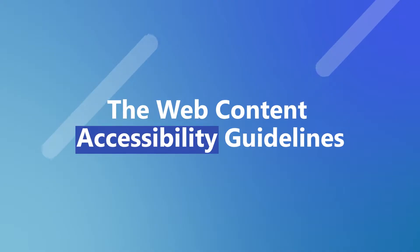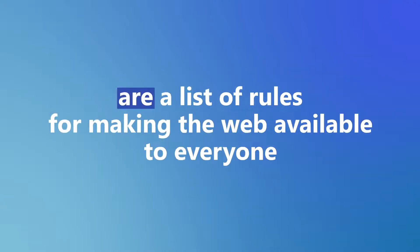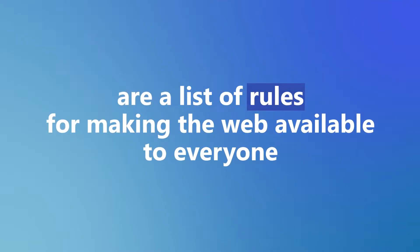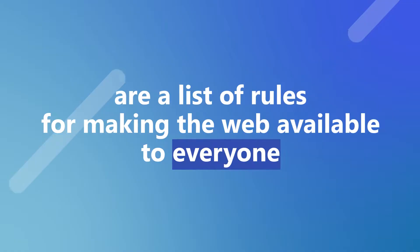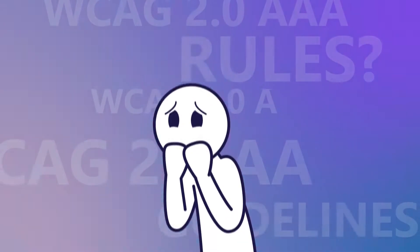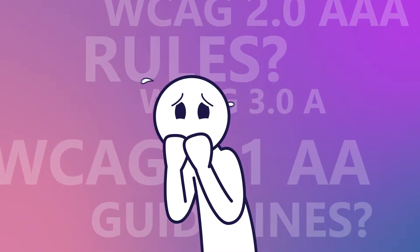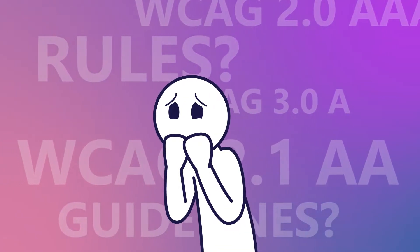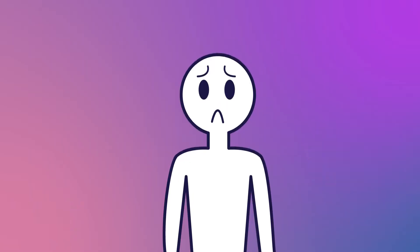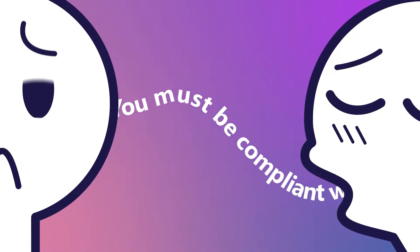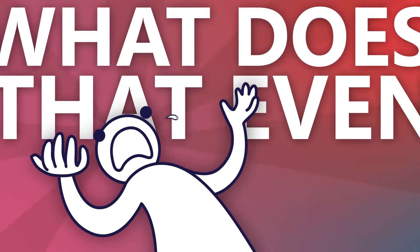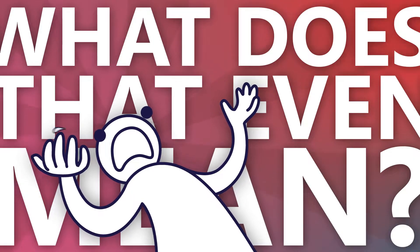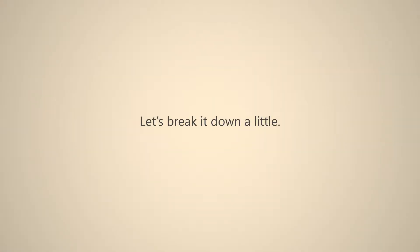The Web Content Accessibility Guidelines are a list of rules — just go with it — for making the web available to everyone. This may seem daunting at first, but I'm going to walk you through it. You'll often hear or see things like: you must be compliant with WCAG 2.1 AA. But what does that even mean? Let's break it down a little.